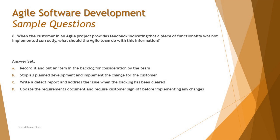We should first document it, list it, and keep it ready for consideration in the upcoming sprint. Option A says record it and put an item in the backlog for consideration by the team — that looks very good. Option B says stop all planned development and implement the change for the customer — that's not right. We don't change our sprint plan because agile is all about changing requirements being managed through the backlog, not mid-sprint disruption.